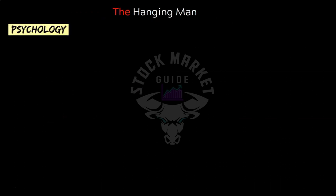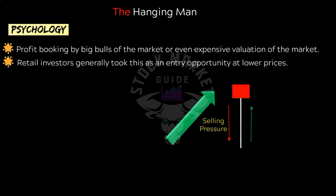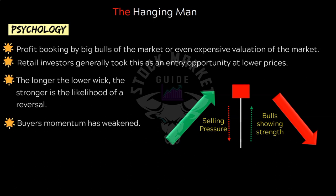Now let's understand the psychology of the hanging man pattern. As the price rises steadily forming an uptrend, one day the price falls heavily due to selling pressure — this can be because of profit booking by big bulls or expensive valuation of the market. Retail investors generally take this as an entry opportunity at lower prices, leading to price recovery, ending slightly above or below the opening price. Thus the hanging man can be treated as a first signal of weakness during an uptrend.